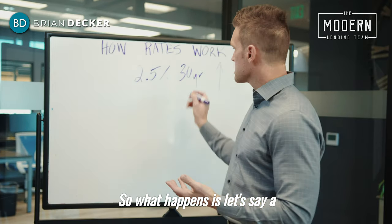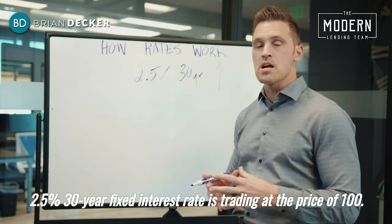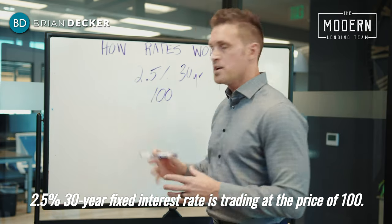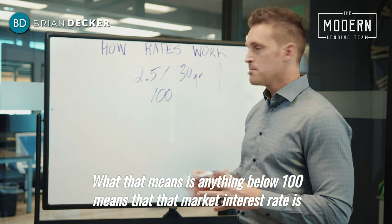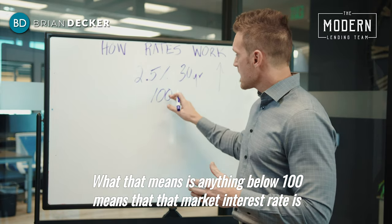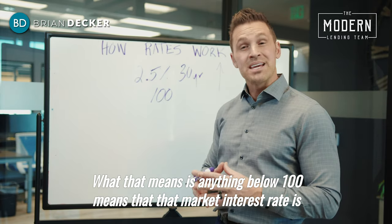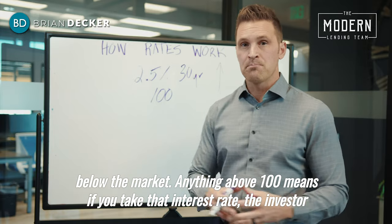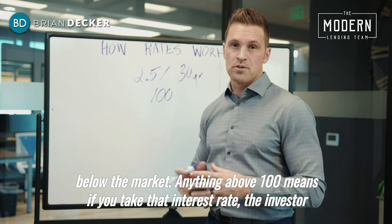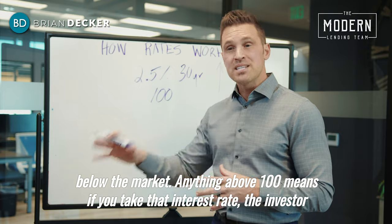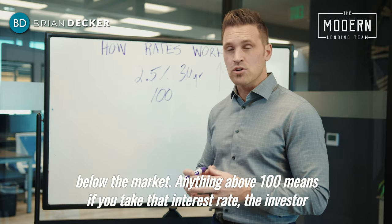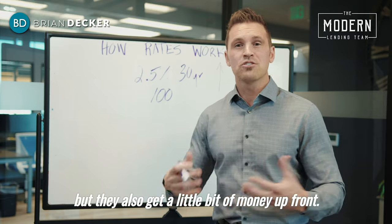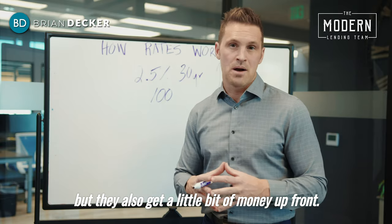A 2.5% 30-year fixed interest rate trades at a price of 100. Anything below 100 means that interest rate is below market. Anything above 100 means the investor not only collects the 2.5%, but they also get a little bit of money upfront.